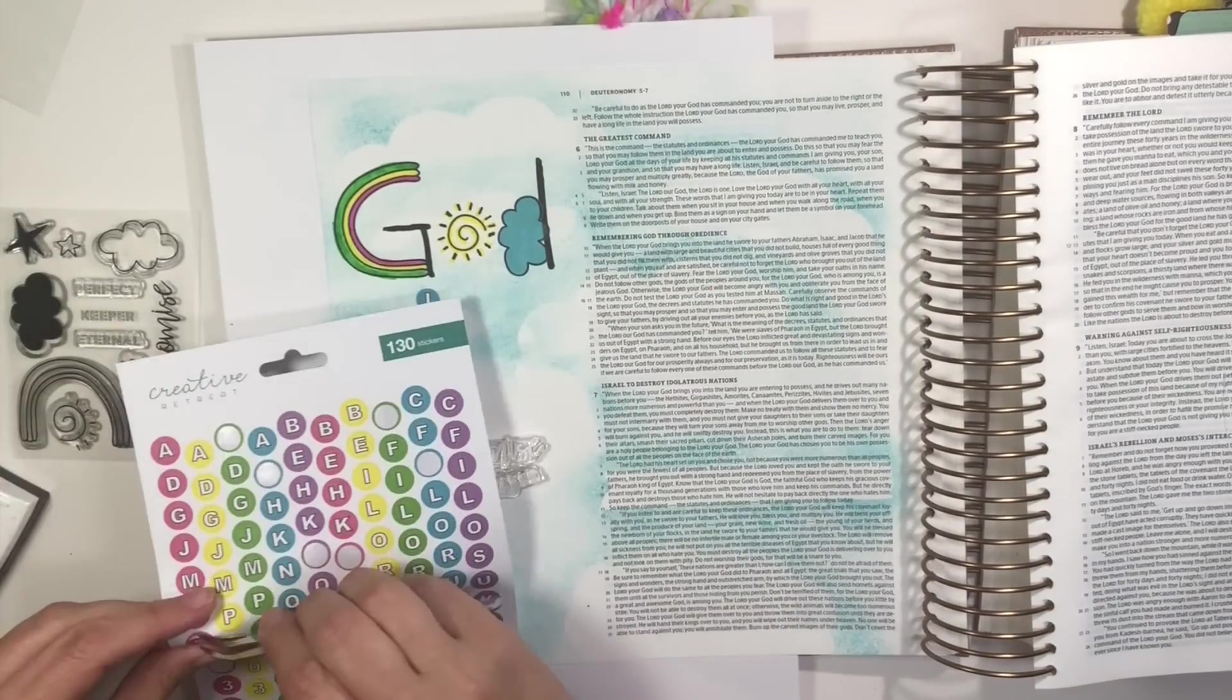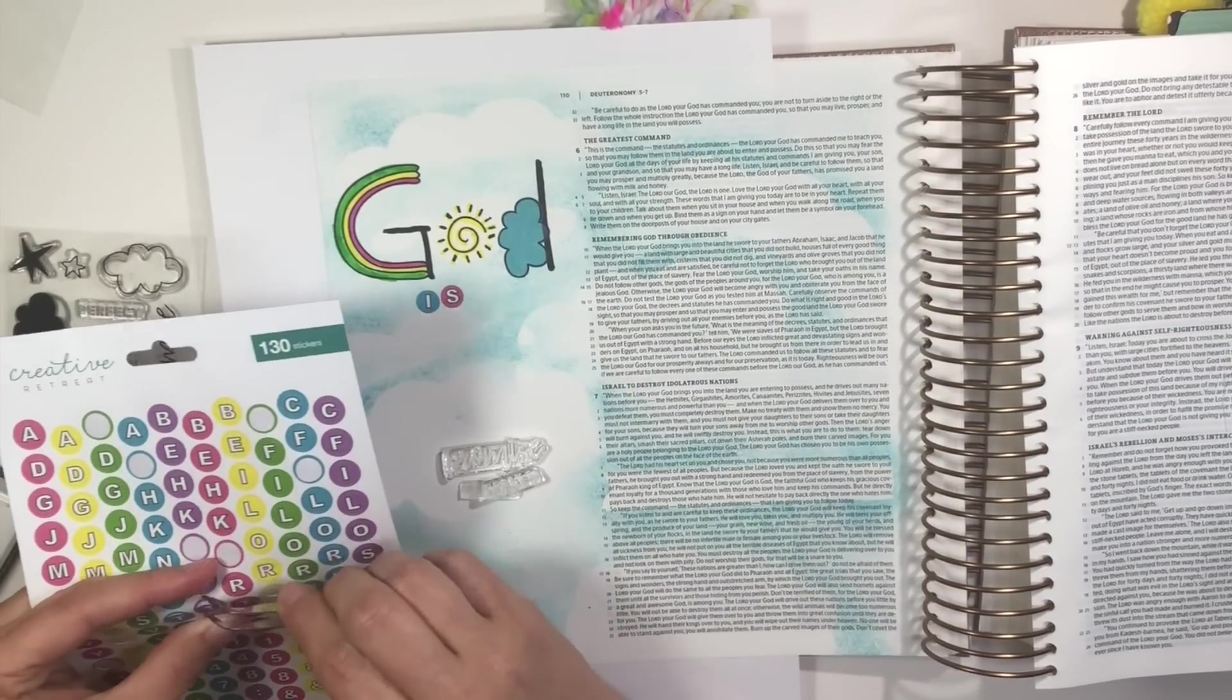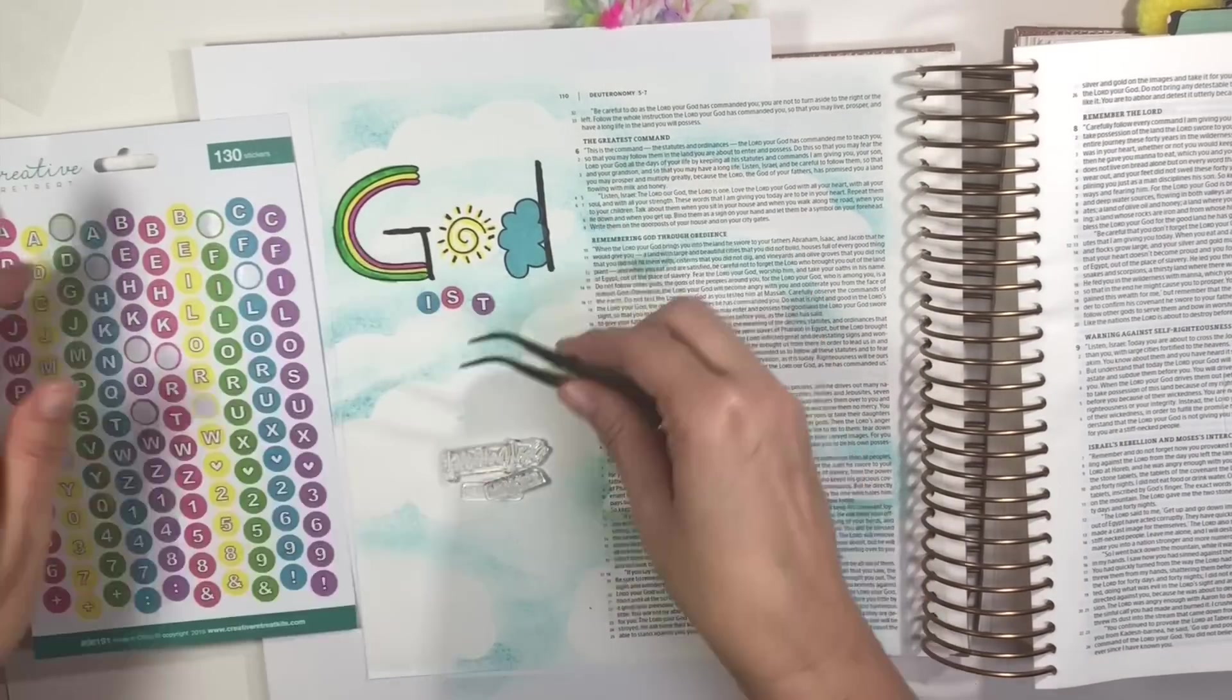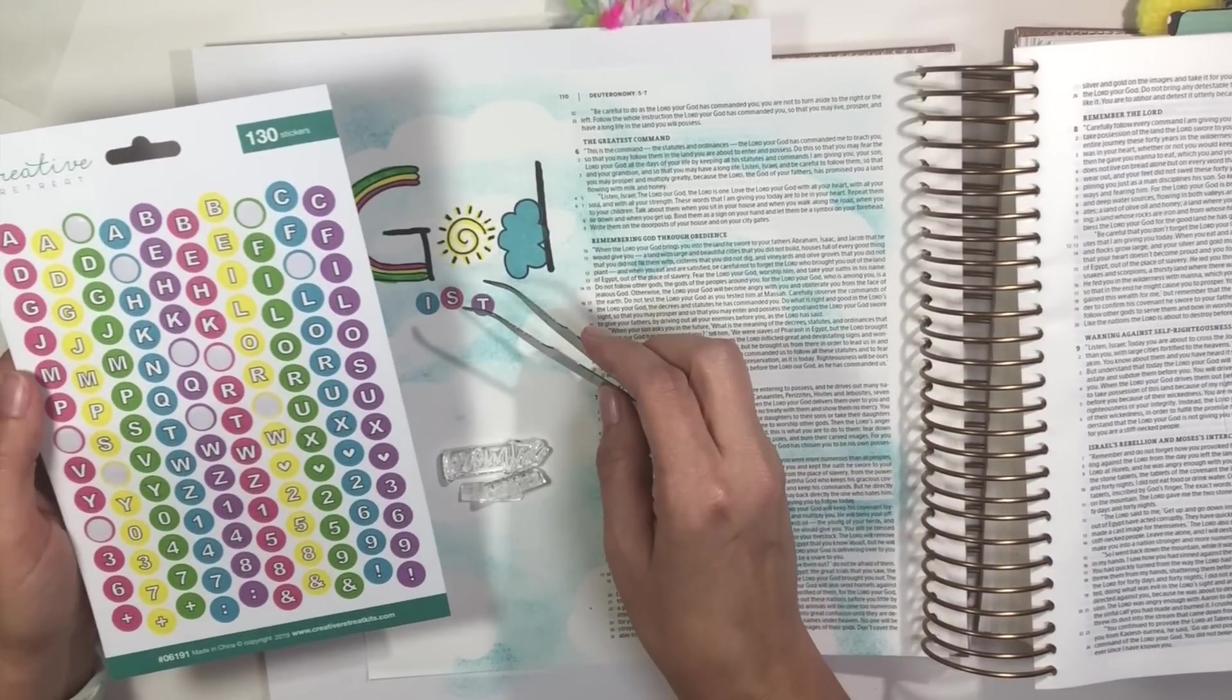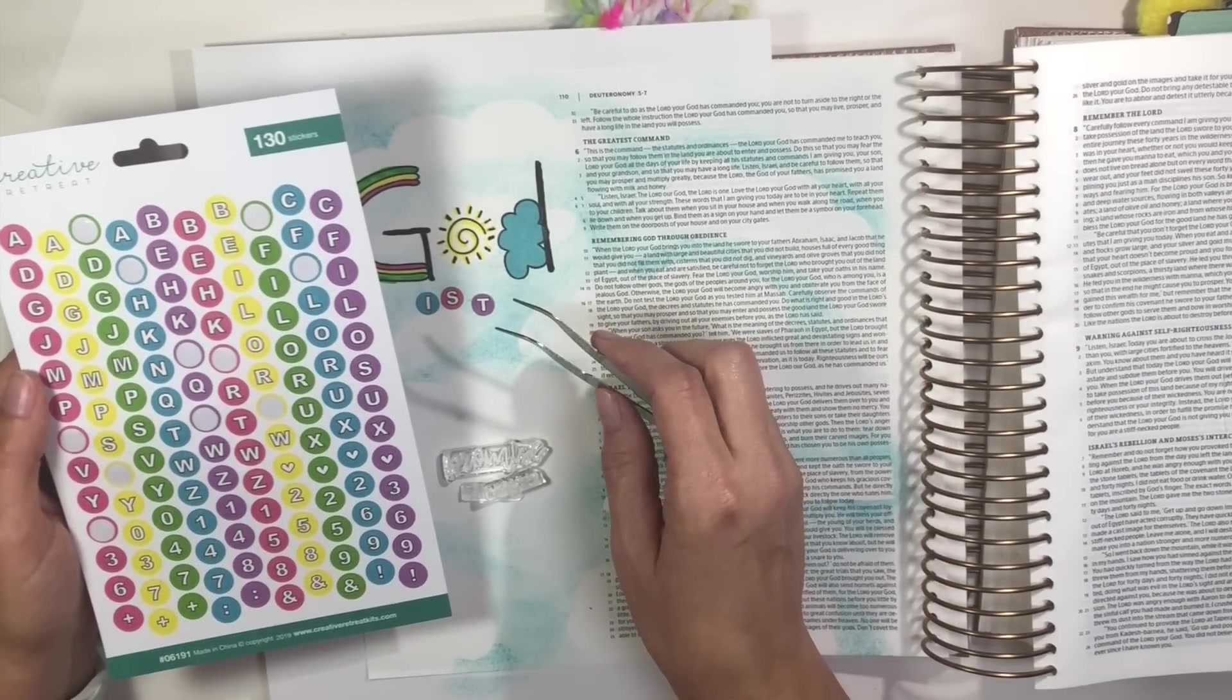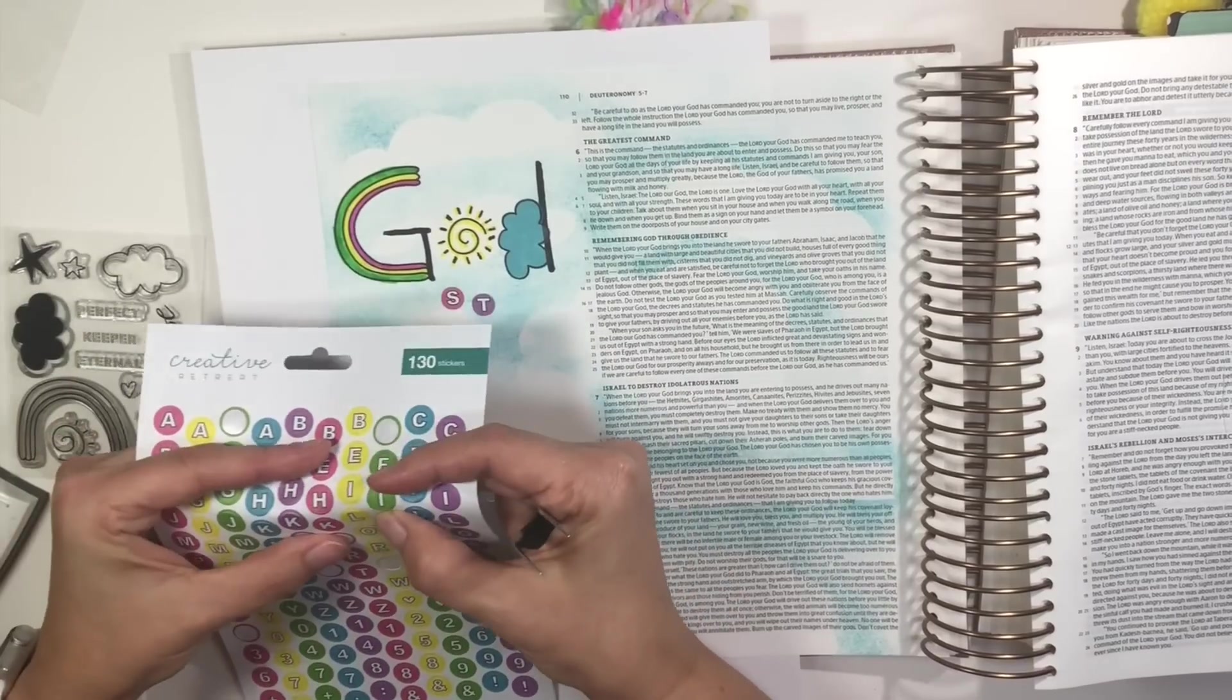Now, my title here is going to be God is the promise maker and promise keeper. Let me talk about this passage. It's Deuteronomy chapter 7, verses, let's see, 7 through 9. And it talks about how God is so faithful, and He makes an oath. He's the keeper of the oath.